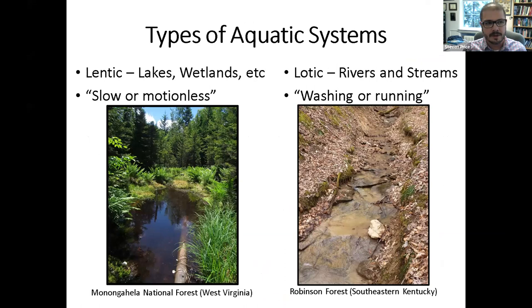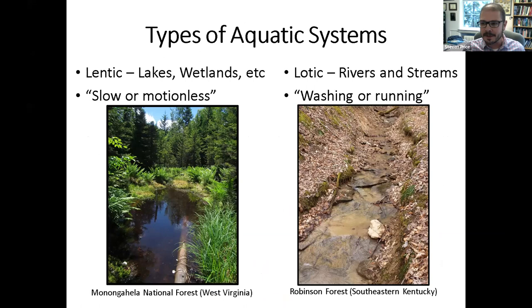When we think about aquatic systems, there are really two types. There are lentic systems, which are lakes and wetlands - the term lentic means slow or motionless. Wetlands are present in Appalachia and important for a number of species. But I really want to focus today on lotic systems - rivers and streams. Lotic means washing or running, and these lotic systems have some of the highest levels of biodiversity anywhere in the temperate world.